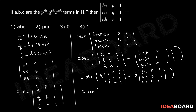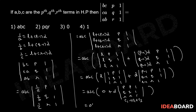This equals ABC into 0 — since the first and third columns are identical in the first determinant — plus D into the determinant where, by applying the column operation C1 → C1 + C3, we get columns P, Q, R equal to P, Q, R, making the first and second columns identical. Therefore this value is also 0, and the overall result is 0. Therefore option 3 is the correct answer.